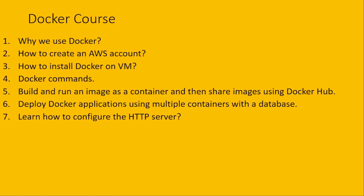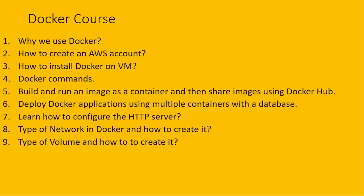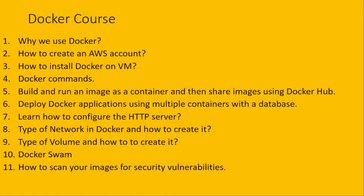After that we will learn the types of networks in Docker and how to create them. The ninth topic will be types of volumes and how to create them, and Docker Swarm — if we have multiple containers, how we can manage them with a single file. After that, how to scan your image for security vulnerabilities. And last but not least, why we need Kubernetes if we already have Docker.